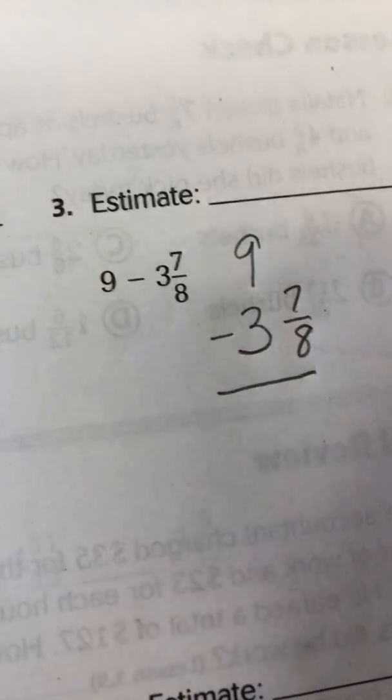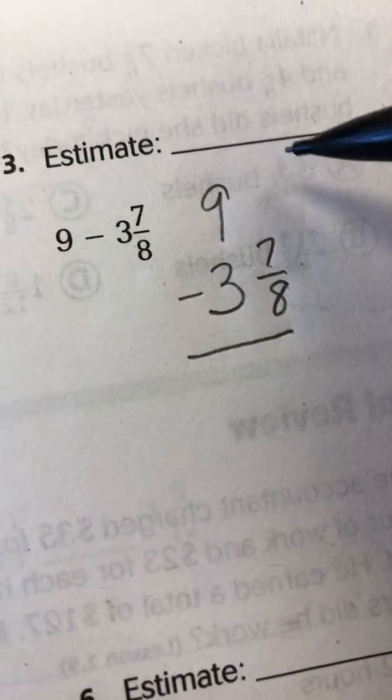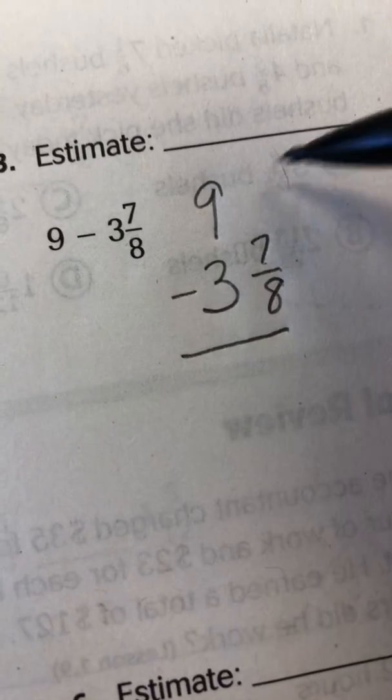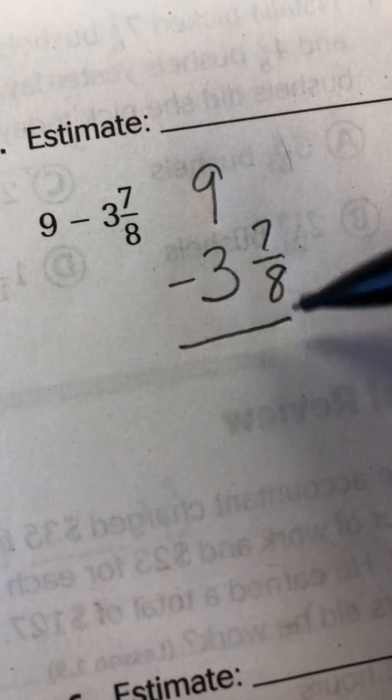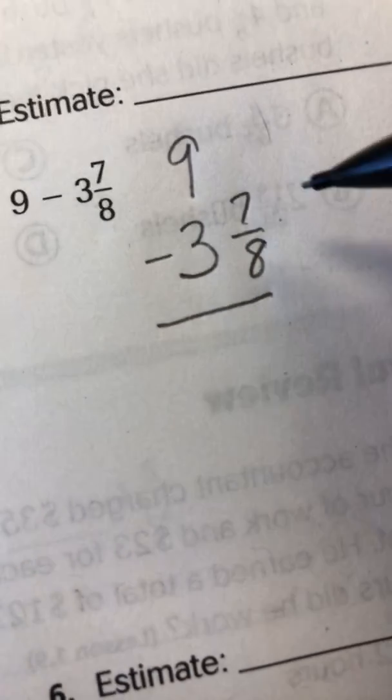Now, when I go to subtract this, I notice, wait, there's nothing here. I don't have a fraction here. But I need to put one here in order to subtract the 7/8. So again, we're going to do some regrouping.